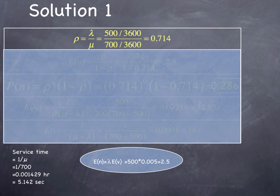First thing, what do we need to calculate? We need to calculate rho. Rho is lambda over mu, 500 vehicles per hour arriving, 700 vehicles per hour service rate. This gives us a capacity utilization of 0.714.